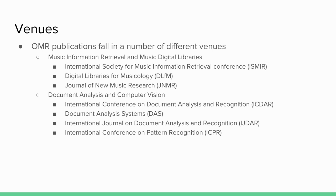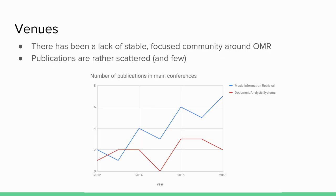Here I'm listing some of the most important venues for OMR. If we have convinced you that OMR is what you want to do in coming years, here are some venues you may be interested in. The problem, as I said, is that there has been a lack of a stable community. Publications are rather scattered across all these communities. I have a plot here where OMR publications have been accepted in these fields. The blue line is music information retrieval, mostly ISMIR, in which we are getting a maximum this year with seven papers including ISMIR and the DLFM — a workshop held after ISMIR — and document analysis systems are losing interest in OMR, unfortunately.